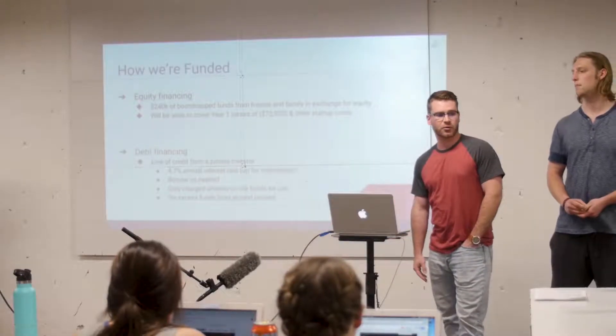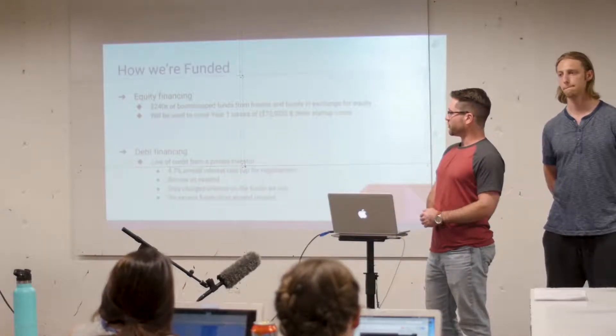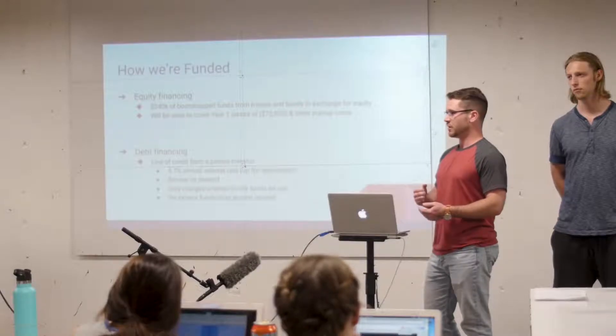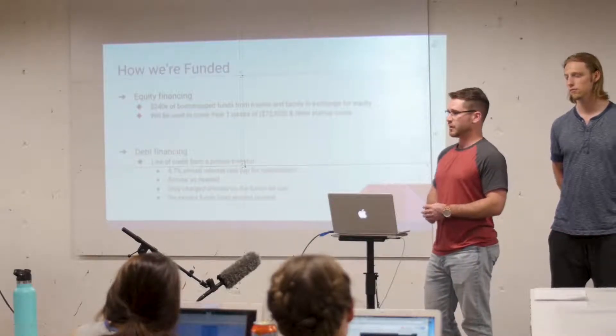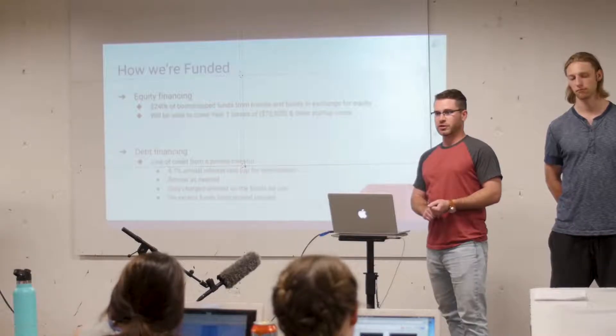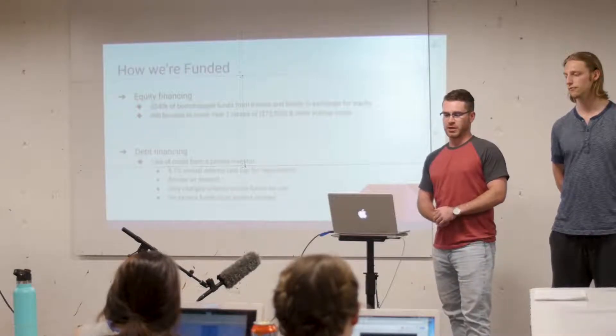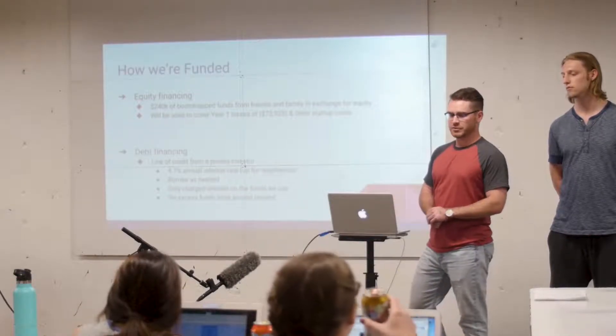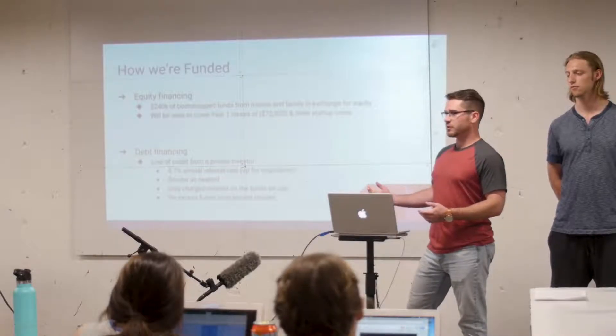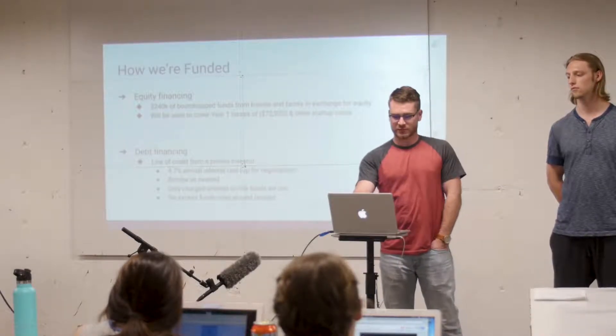So now kind of diving into how we're actually funded. Equity financing isn't really in our best interest as a company. So we're keeping that pretty minimal. Our first year, we're going to try to raise about $240,000 of bootstrapped funds from friends, family, and other resources. That's going to be used to cover our first year's losses and then other startup fees on top of that. And then after that, we're really going to dive mainly into debt financing. So like we mentioned, we're borrowing on a line of credit from a private investor, at about four, four and a half to five percent, we put 4.7 just kind of for middle grounds and we're borrowing as we need.